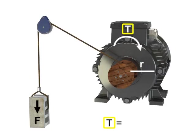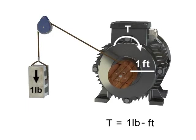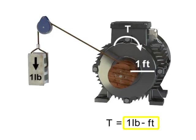Torque occurs when a force acts on a radius. Typical units of measurement for torque are pound foot. The torque illustrated here is equal to one pound foot.